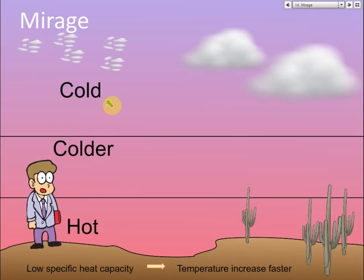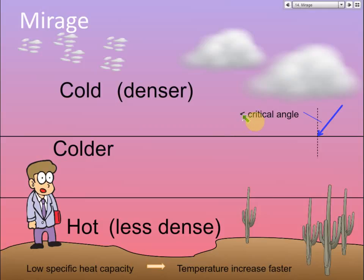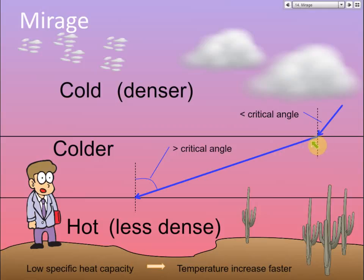For cold air, the density is higher and optically it is also denser. So if a light ray moves down from the cloud, it will be refracted because it moves from a denser to a less dense medium. If the angle of refraction is less than the critical angle, it will be refracted away from the normal. As the light moves further down, this angle becomes much bigger than the previous angle — this angle is smaller, and the next angle is bigger.